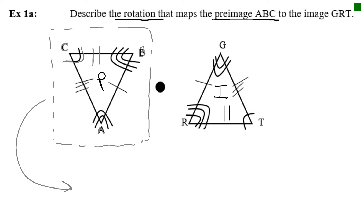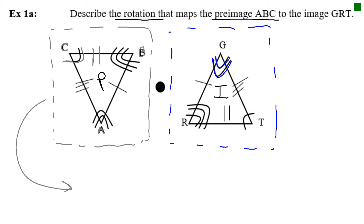Each time you turn the paper, it's going to be 90 degrees. You're going to rotate it and place it on top of the image to see if the corners match up — specifically making sure the symbols match up. When you rotate it once 90 degrees, you'll notice it does not match up. When you rotate it twice, all the symbols match up. Two turns of 90 degrees each gives you 180, so this is a rotation of 180 degrees counterclockwise.